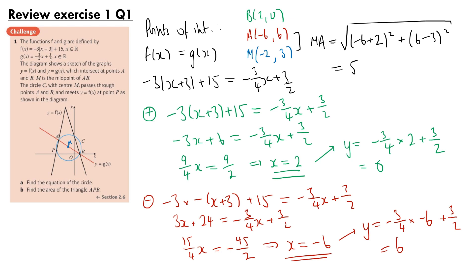Therefore the equation of the circle for part a is (x plus 2) squared plus (y minus 3) squared equals 25, using the coordinates of M as the centre and radius squared equal to 25.